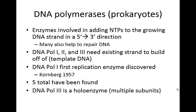Many of them have proofreading functions, and they can literally scan the DNA, remove errors, and replace them. DNA Pol 1, 2, and 3 all need existing strands to build off of — they need this template to begin with, they need something to bind to. DNA Pol 1 was the first replication enzyme discovered by Arthur Kornberg in 1957, and he won the Nobel Prize for this. In prokaryotes, five total have been found, all for slightly different purposes. DNA Pol 3 is a really important one, and we call this a holoenzyme — it has one function but many different subunits, each controlled by different genes.